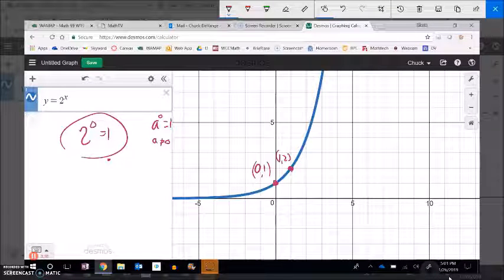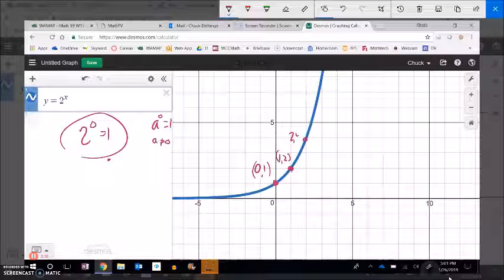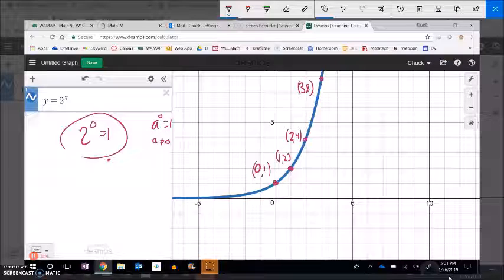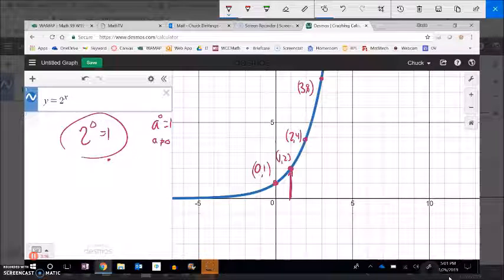So basically, a to the 0th power, not the 8th power, a to the 0th power is 1, as long as a doesn't equal 0. 0 to the 0 is undefined. We can't resolve it, absolutely. So there's that. And then notice this is the point 1, 2. This is the point 2, 4.